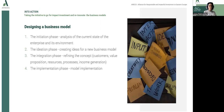There are four steps, four phases of designing a business model. First is the initiation phase, where we analyze the current state of the enterprise and its environment. The next stage is the ideation phase, where we create ideas for a new business model. Next is to integrate and refine the concept, focusing on customers, value proposition, resources, processes, and income generation. The last phase is the implementation phase, where the model is ready to implement in reality.